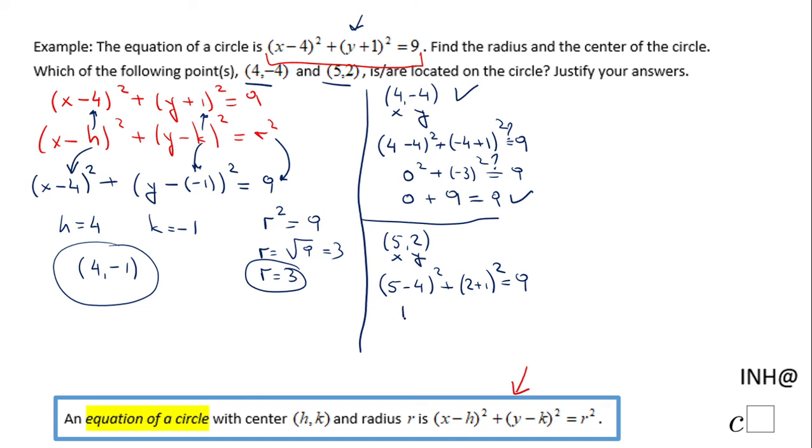5 minus 4 is 1. 1 square plus 3 square. We don't even need parentheses here. Equals 9. And this is 1 plus 9 which is not equals 9.